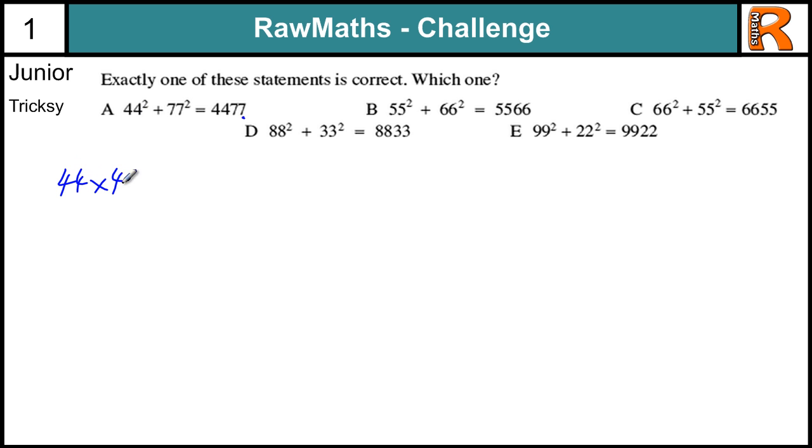So let's have a look at the first one. 44 squared, so 44 times 44. If we just look at the last digit, 4 times 4 gives us 16. So the last digit of whatever this answer is, is going to be a 6. And then 77 squared, 77 times 77, is going to end in a 9, because 7 times 7 is 49. When we add those together, we're going to get a 7. Let's see what happens with 55 and 66. 55 we're going to end in a 5, because 5 squared is 25. And 66 is going to end in a 6. When we add those together, it's going to end in a 1. So that doesn't work.